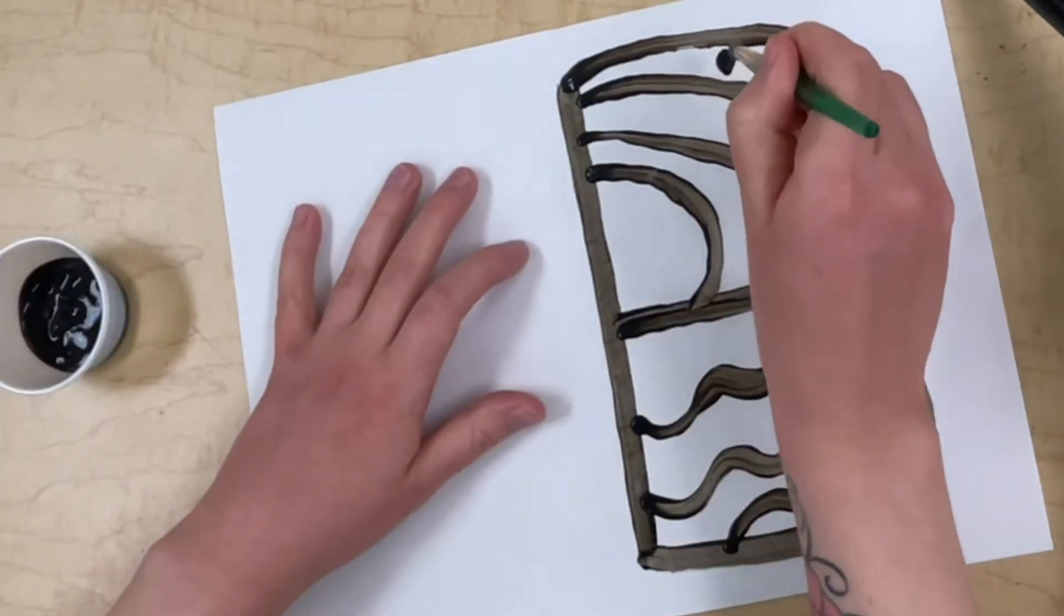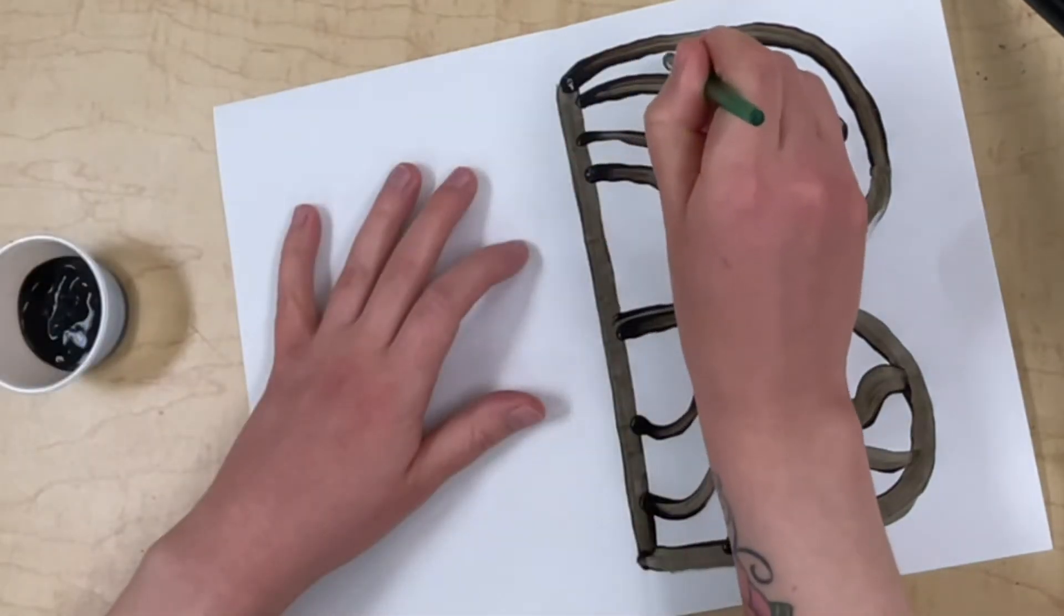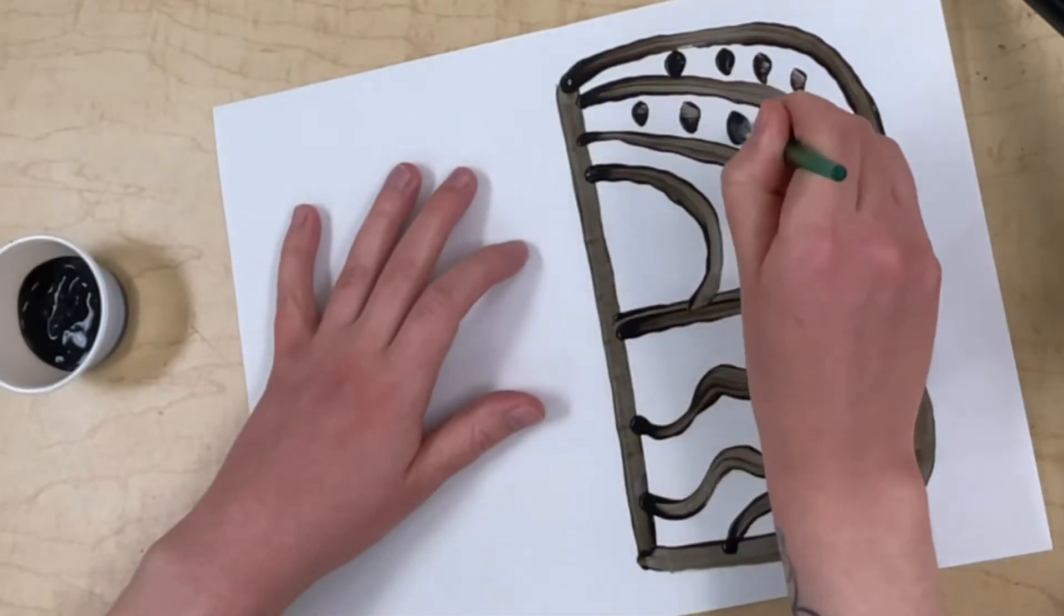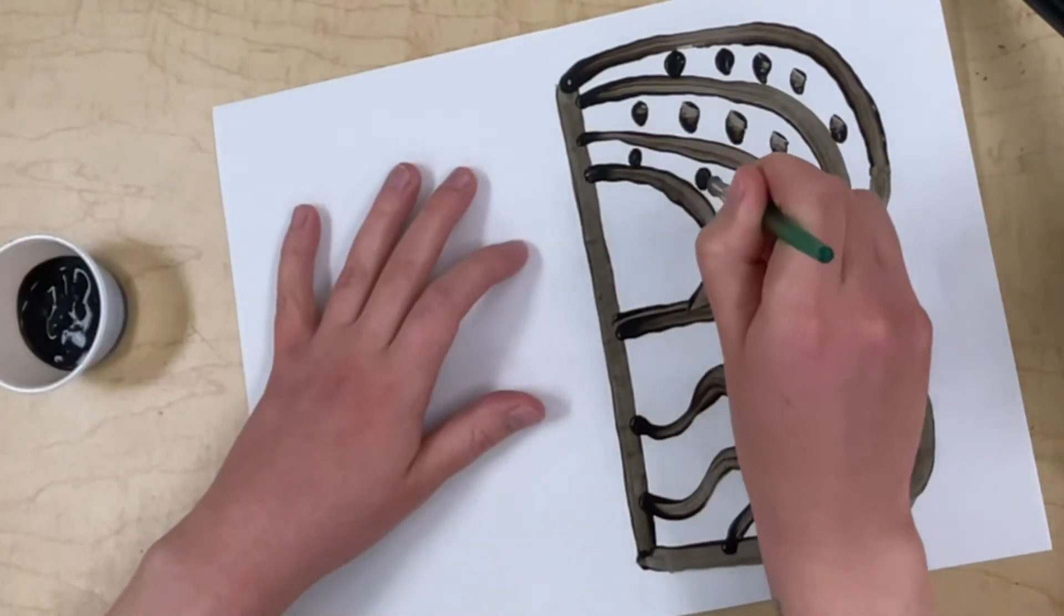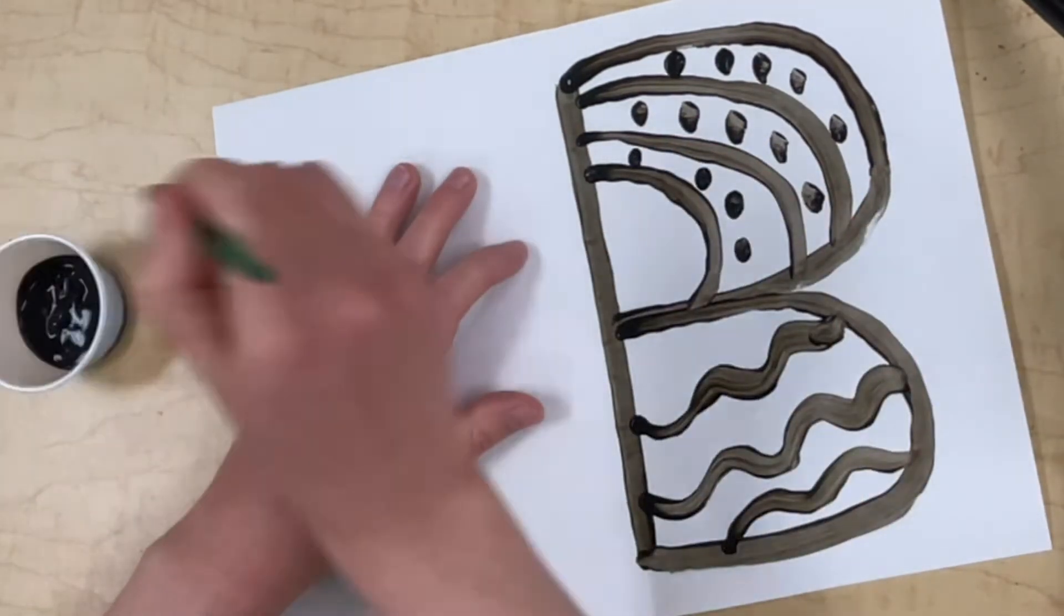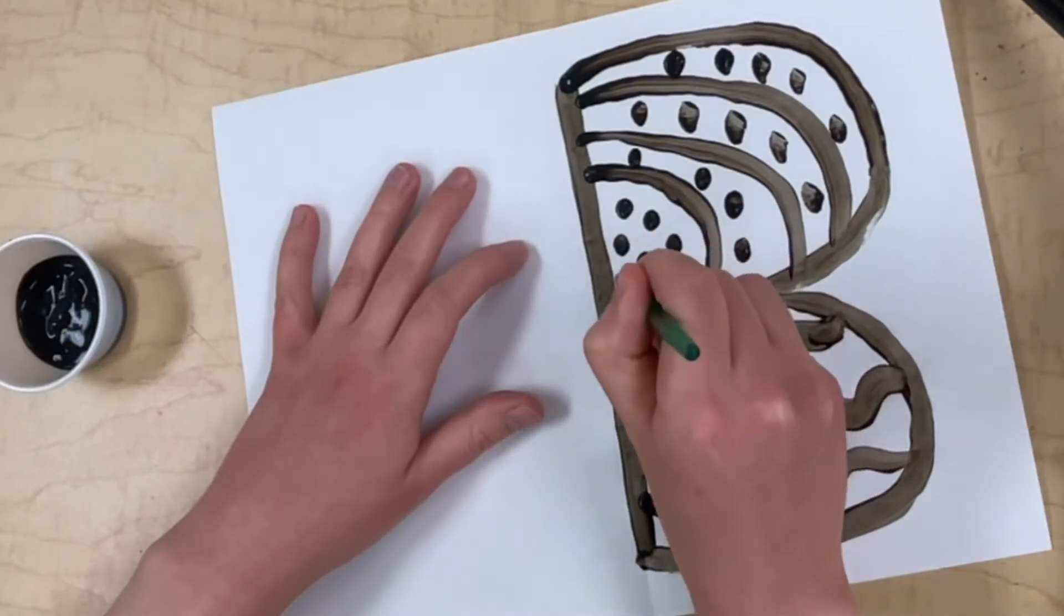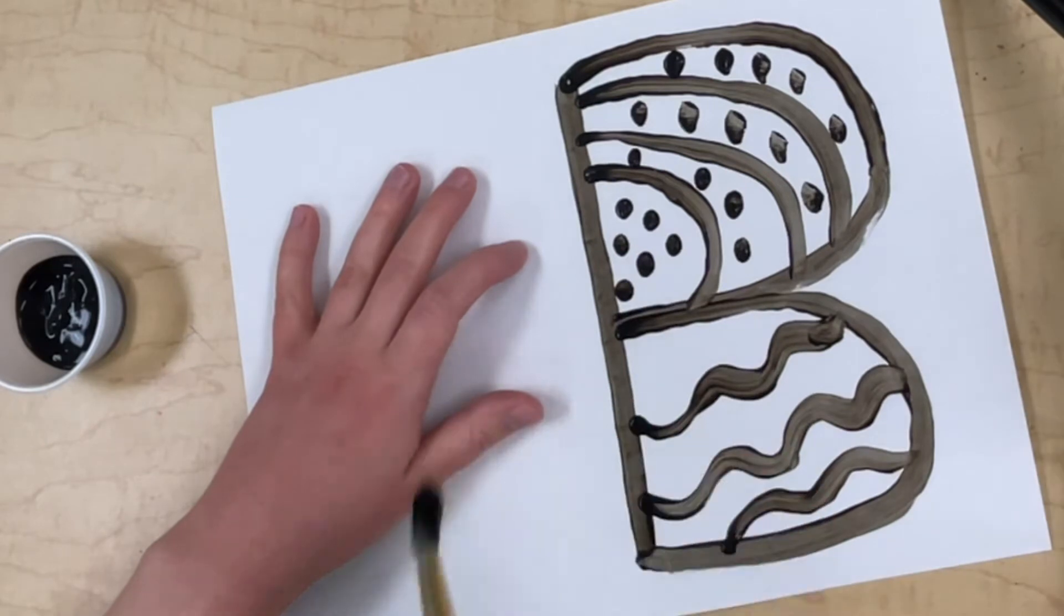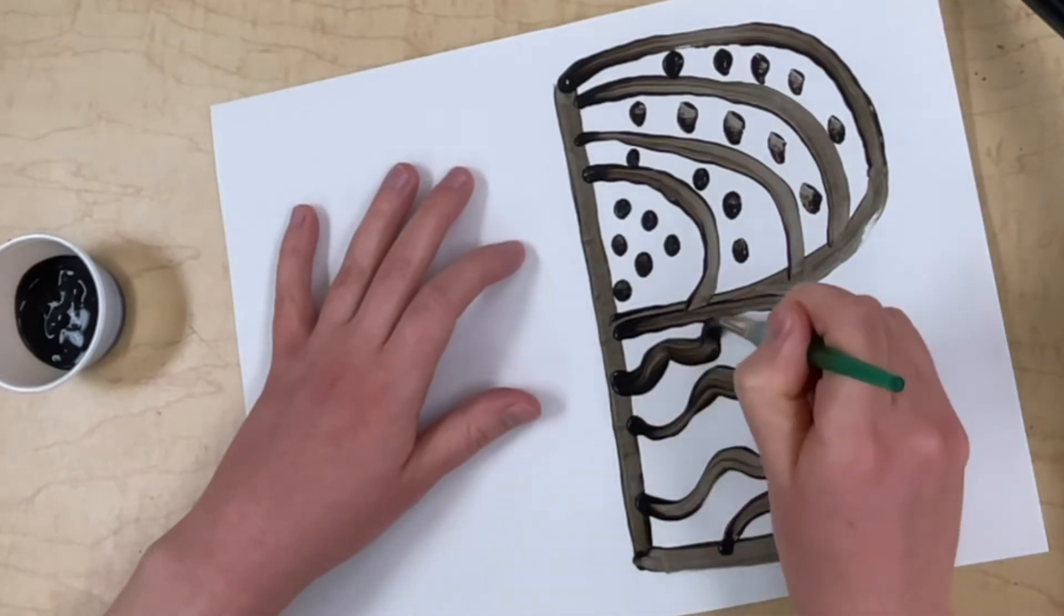Next, I'm going to do a pattern of dots. Now I'm trying to do my best, but I'm also trying to go a little bit quickly so that my paint doesn't dry. We're going to need the paint to be wet in order to make a monoprint, the other half of our butterfly. So there's my dot pattern, and then on the bottom, I think I'm just going to add one more wavy line to complete the pattern.